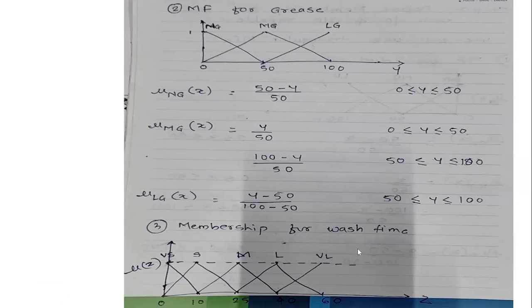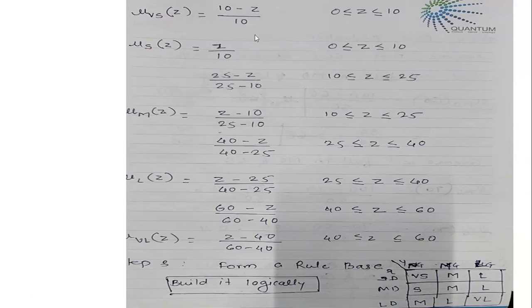For the output, the membership function for wash time uses 5 descriptors with these ranges: very small is 0 to 10, small is 0 to 25, medium is 10 to 40, large is 25 to 60, and very large is 40 to 60. Now let us see the membership function formulas for wash time.